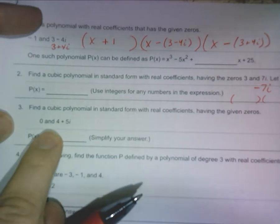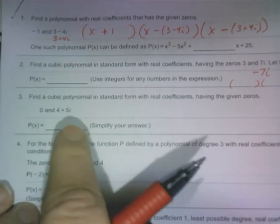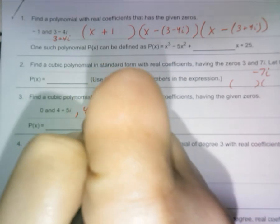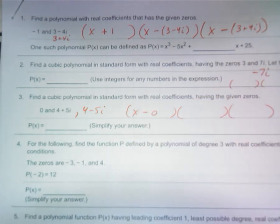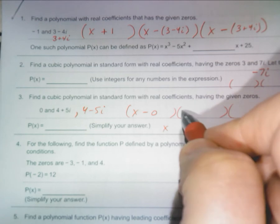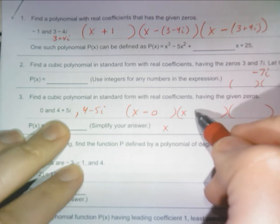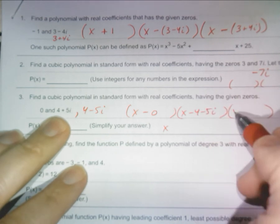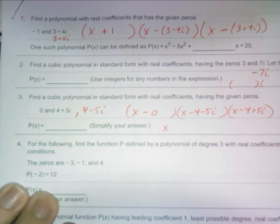Let me do number three — let me set you up. Find a cubic polynomial having the given zeros: zero and four plus five I. Again, they didn't write the other I — what's the other I going to be? Four minus five I. So if you were to write these out, you would have X minus zero, which is just X. Then X minus four minus five I and X minus four plus five I, distributing the negative through just like we did above. Then you're going to foil that out and then foil it with X.